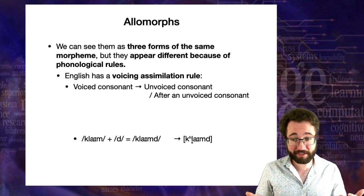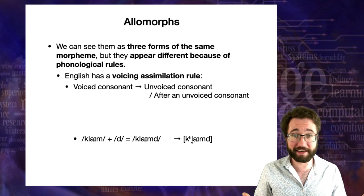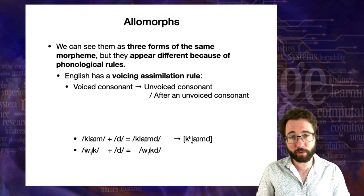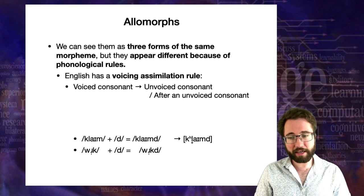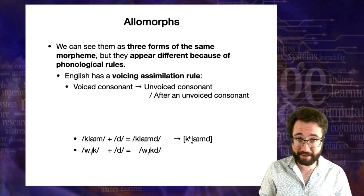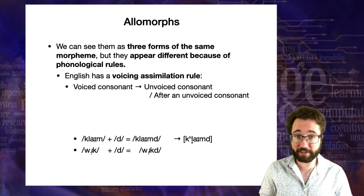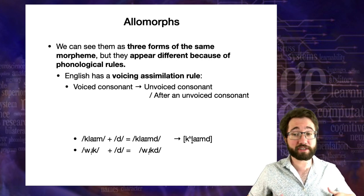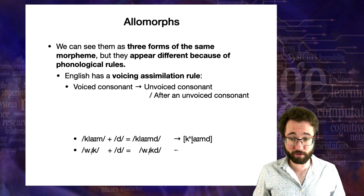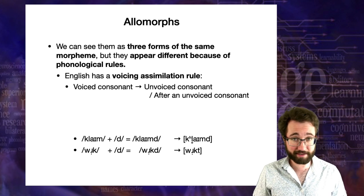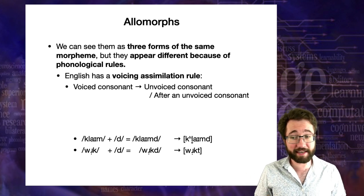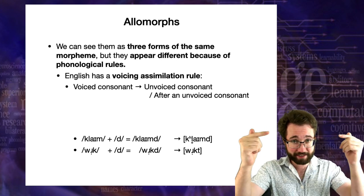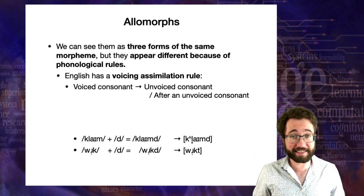The voicing assimilation rule does apply to the L, which is why the L gets unvoiced in 'climbed'. When we take 'work' and add a phoneme D at the end — phonemically 'workd' — if we apply this voicing assimilation rule, what we get is 'worked', which is exactly the phonetic form. So underlyingly we have the same phoneme D, but phonetically we're getting different sounds: D and T.